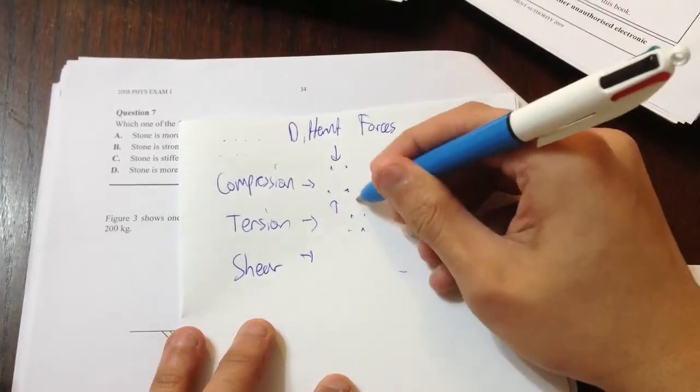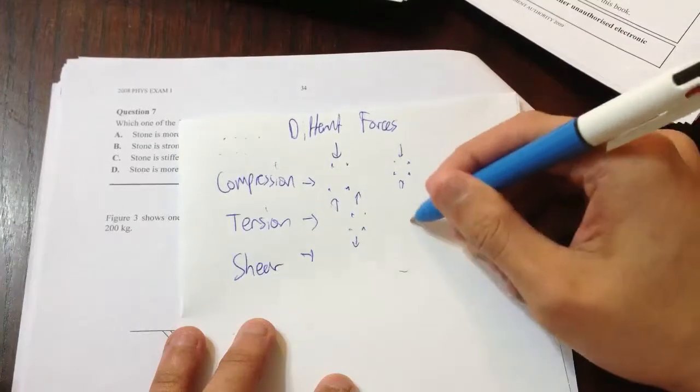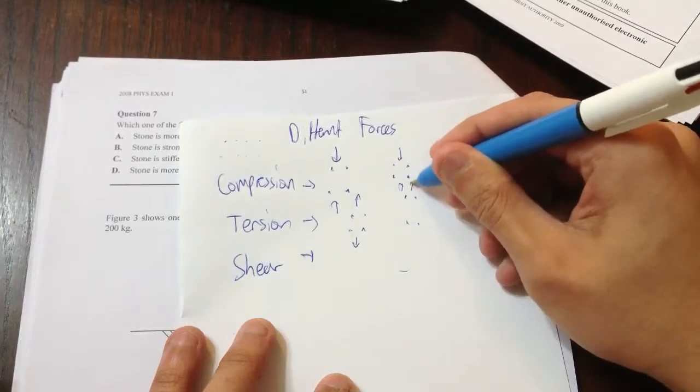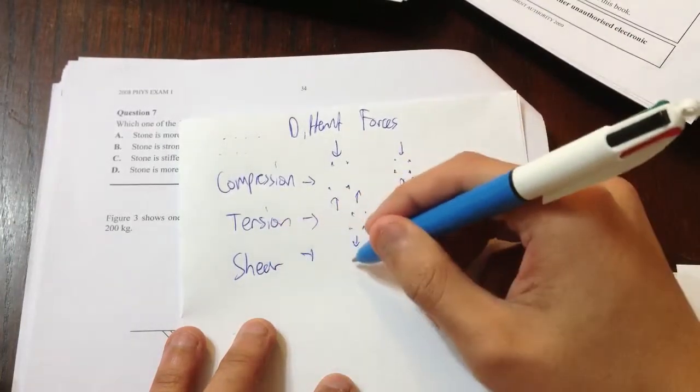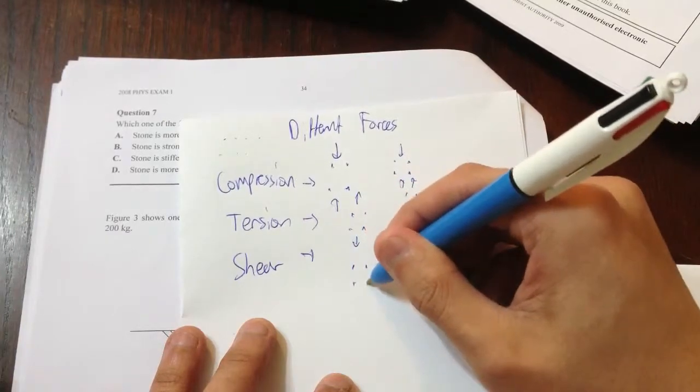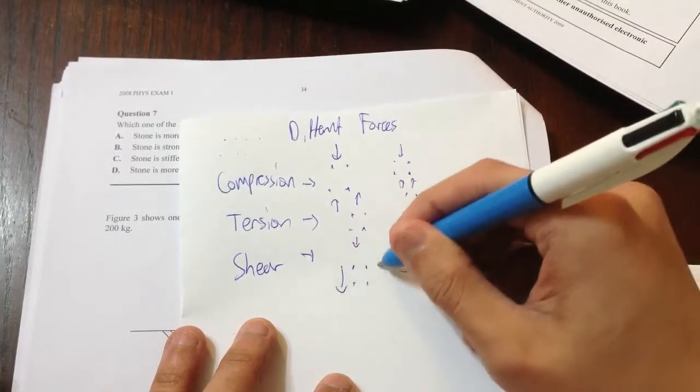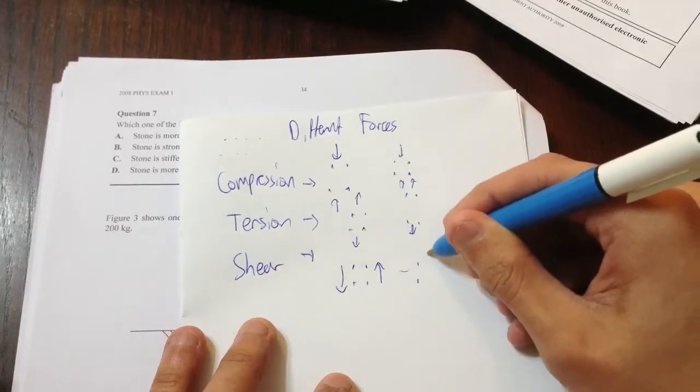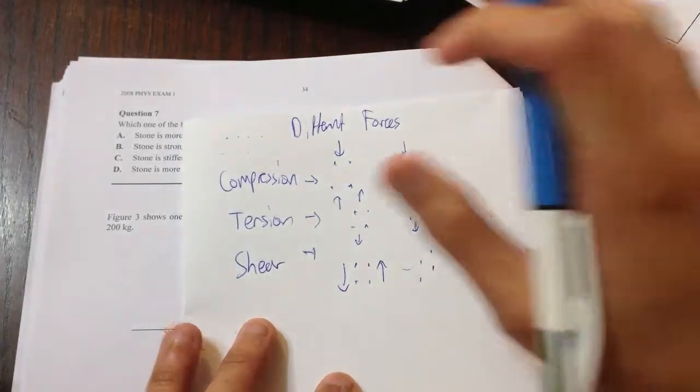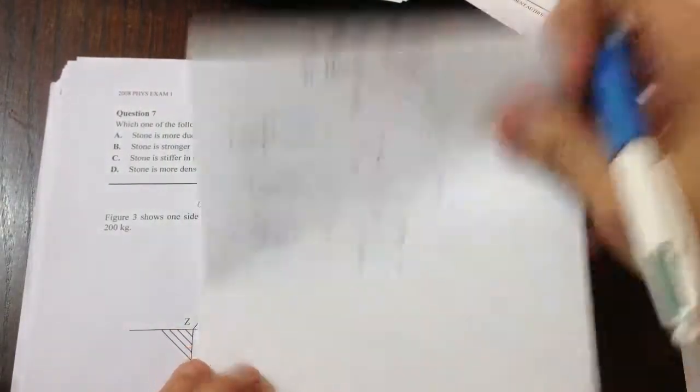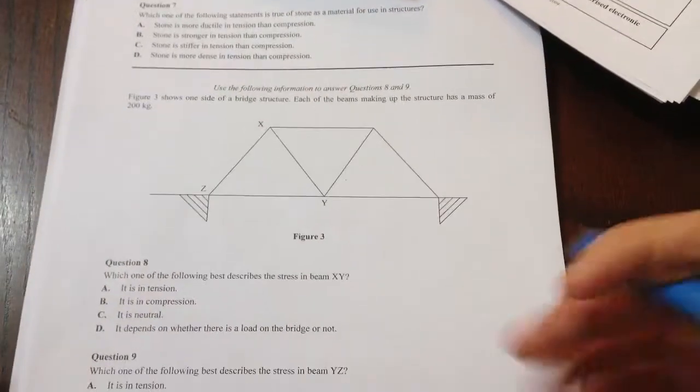If they're under tension, say I'm pulling them apart, what will happen to them? They get stretched. Genius. And for shear, what's happening is I'm keeping one side like this and one side like that. So what happens is they slide over each other. The layers slide over each other. Anyway, it's not very hard. So let's do some questions. It's kind of intuitive.